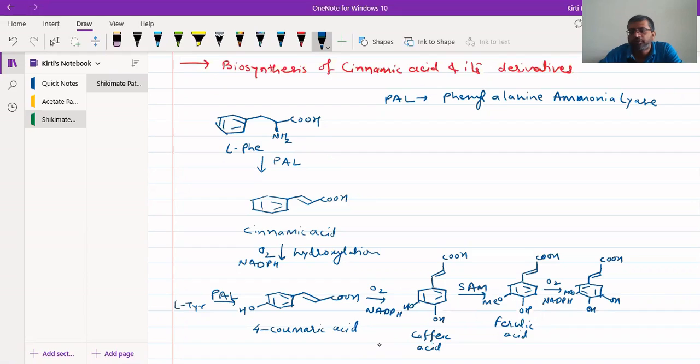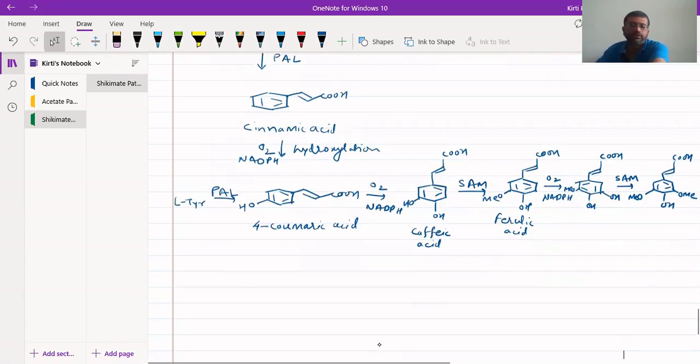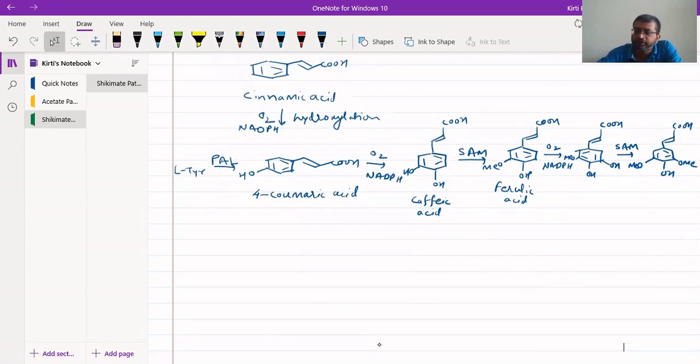This hydroxylated compound undergoes again methylation in presence of SAM. So we will get COOH, here again OCH3, here OH and here OCH3. This last compound that we get is synapic acid.